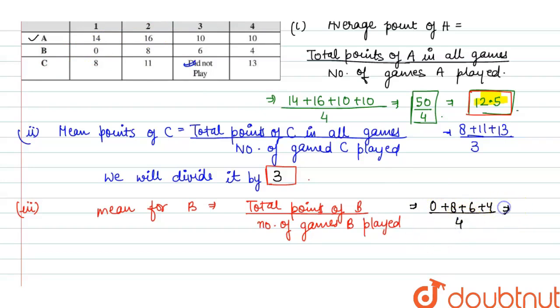So it will be 8 plus 6 is 14, 14 plus 4 is 18 upon 4. It means when reducing it, 9 upon 2, after dividing I get 4.5. So the mean for B is 4.5.